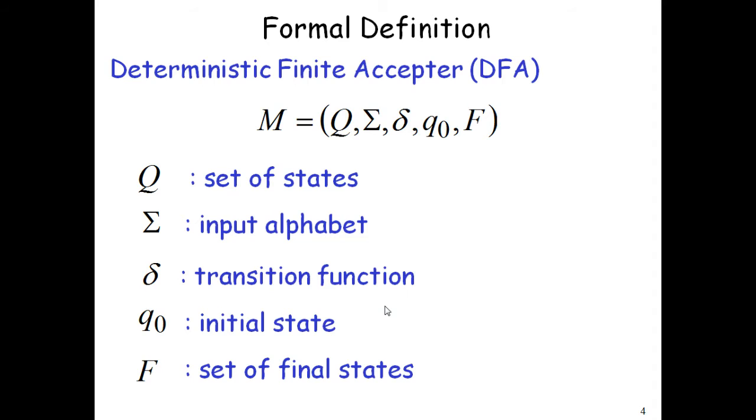We have to go through the formal definition of a deterministic finite acceptor or automata. To understand this, we can consider it as a machine or DFA M which has five tuples: Q, Sigma, Delta, q0, and F. Q is the set of states, Sigma is input alphabets, Delta is transition function, q0 is the initial state, and F indicates set of final states.